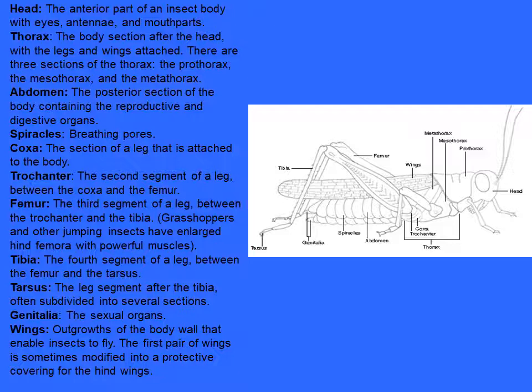Certain other structures observable morphologically are the spiracles, which are the openings of the respiratory system. The respiratory system in insects comprises the tracheal system. Spiracles are the openings of the tracheal system on the outside of the body, where exchange of gases takes place.